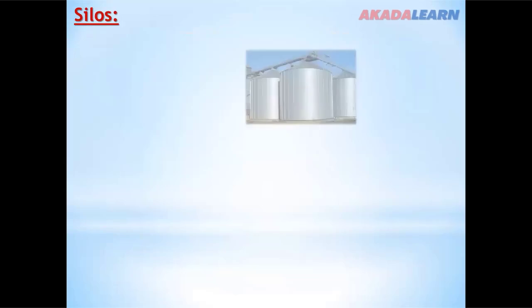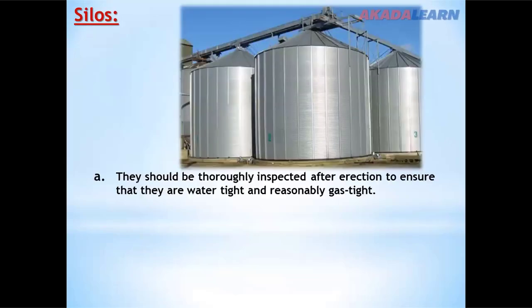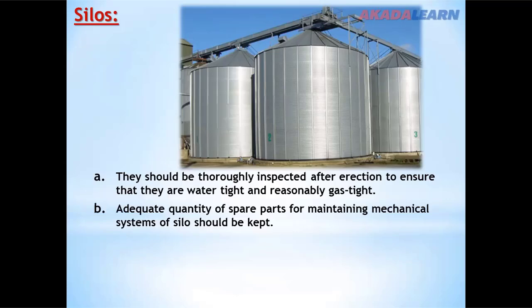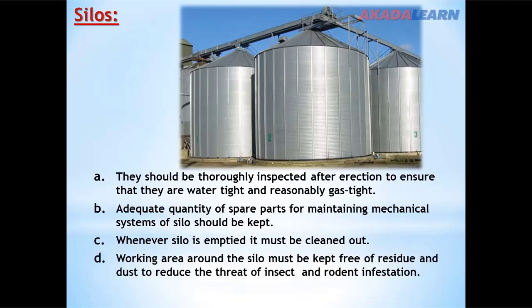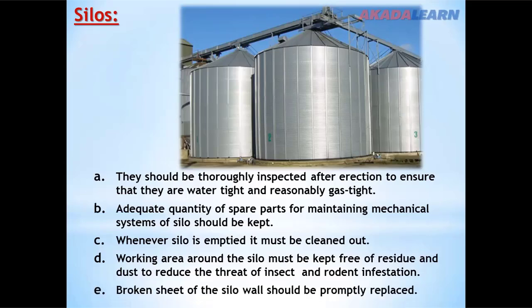For silos: silos should be thoroughly inspected after erection to ensure they are watertight and reasonably gas-tight. Adequate spare parts for the mechanical system should be kept. Whenever a silo is empty it must be cleaned out. The working area around the silo must be kept free of rust and dust to reduce the threat of insect and rodent infestation. Broken sheets of a silo wall should be properly replaced.